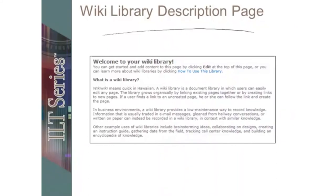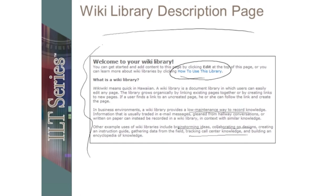Wiki library description page. There is a built-in area that explains all about wikis — their meaning, how they're used within a business environment, and other ways they can be used, such as brainstorming ideas, collaborating, and tracking call center information. It also provides a detailed link with directions on how to edit, create new pages, and put content on them. It does a very good job of sharing information on how to utilize wiki pages if they're new to you. By default, every wiki library has this as the default page, so whoever builds a wiki library will have a good set of directions built in.